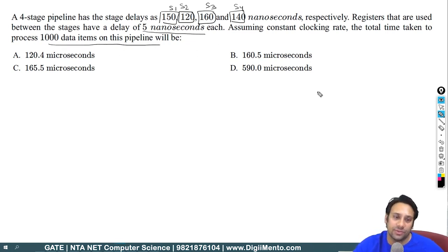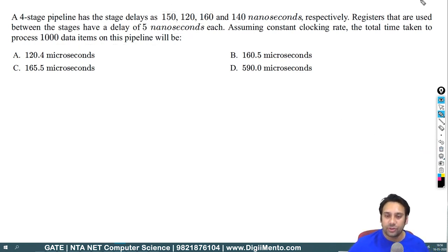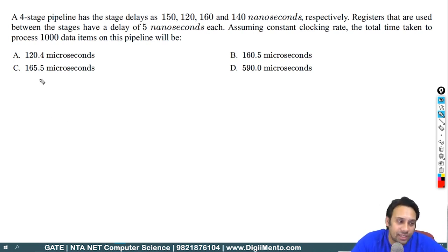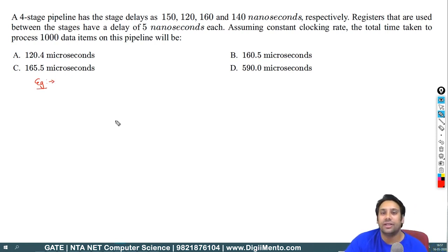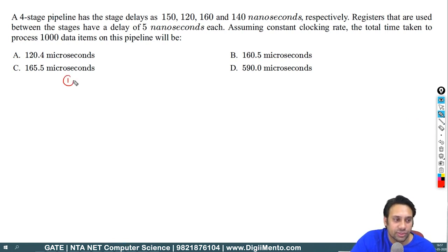The question asks: if you need to process 1000 data items on this pipeline, how much total time will be required? To understand this, you first need to understand that if a pipeline has uneven delay, what effect does that uneven delay have on pipelining? So let me take one example before doing all of them. In pipelining, there are two possible cases: either all instructions need the same clock cycles, or they may require different clock cycles.